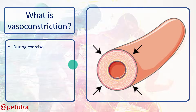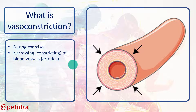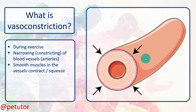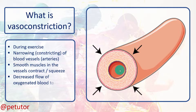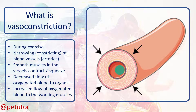So what exactly is vasoconstriction? As we've said, it's the narrowing or constricting of the blood vessels — usually the arteries — which means that the smooth muscles in the blood vessels contract and squeeze. You can see that the passage of blood through the blood vessel gets restricted, and that means there is a decreased flow of oxygenated blood to the organs and an increased flow of oxygenated blood to the working muscles.